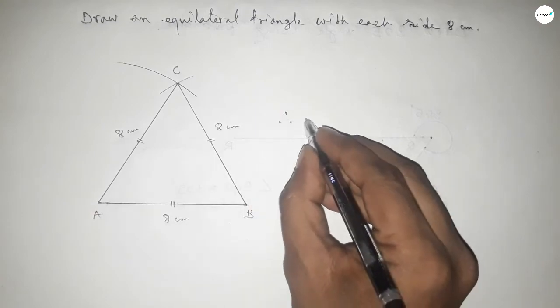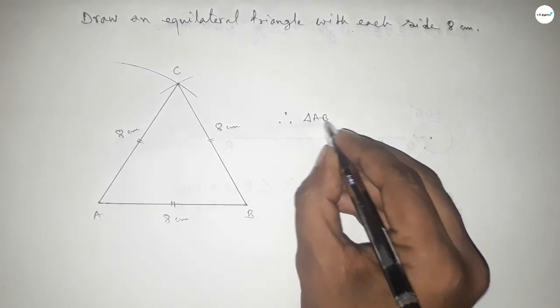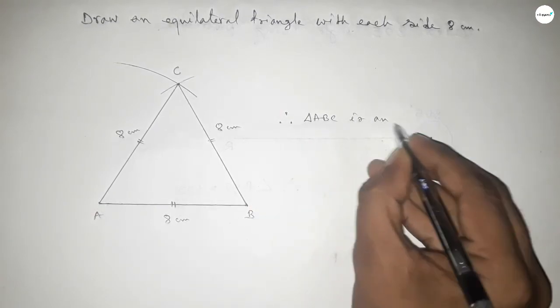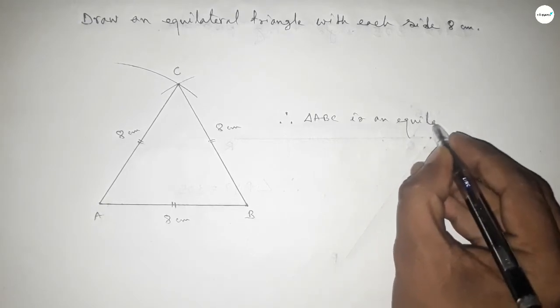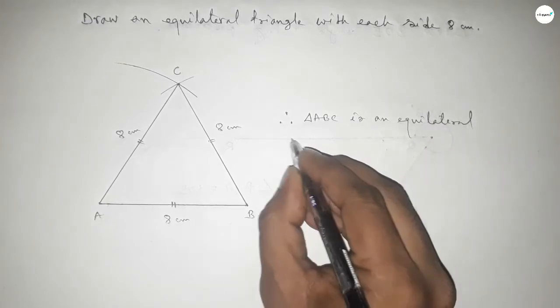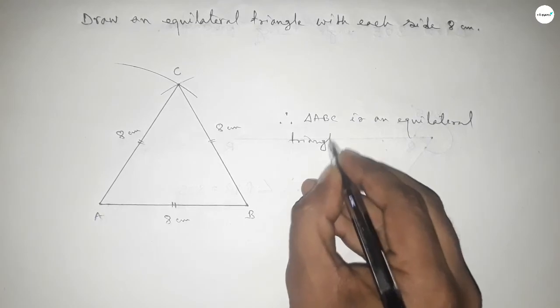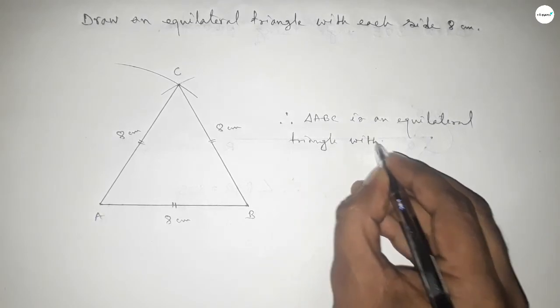Therefore, triangle ABC is an equilateral triangle with each side 8 centimeter. So this is the process to construct an equilateral triangle with each side 8 centimeter.